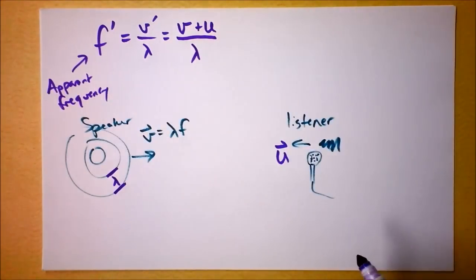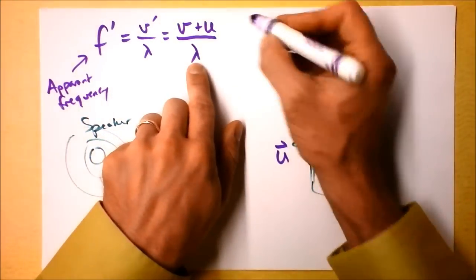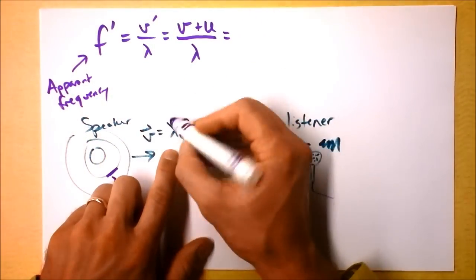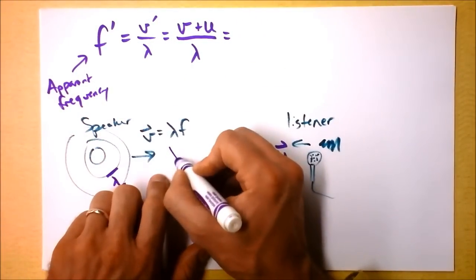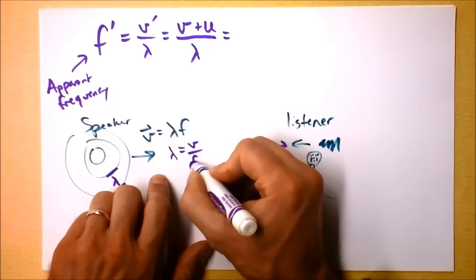Now I'm talking about these guys as scalars. It's how fast the sound is going plus how fast the listener is moving. That would be the apparent speed of these waves. And then we're going to divide that by the same lambda. So you know what lambda is, right? So I'm going to take this lambda right here. Let's solve this for lambda. Lambda is V divided by F.